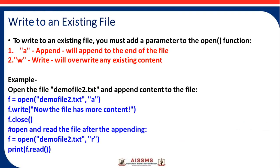To write to an existing file, you must add a parameter to the open() function: A for append, which appends to the end of the file, or W for write, which will overwrite any existing content.